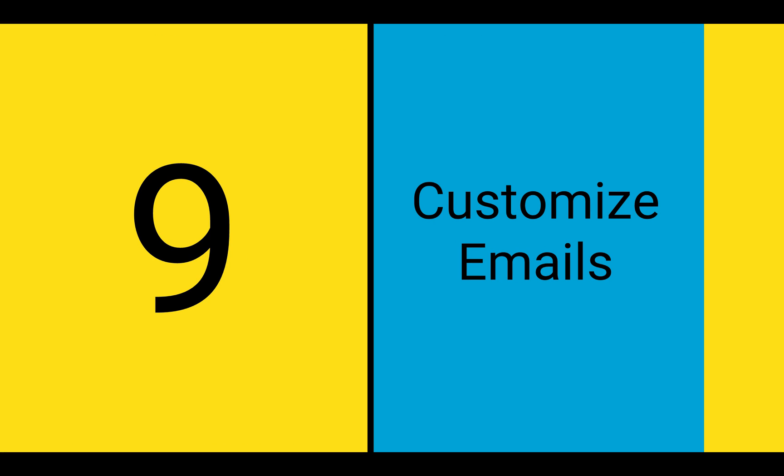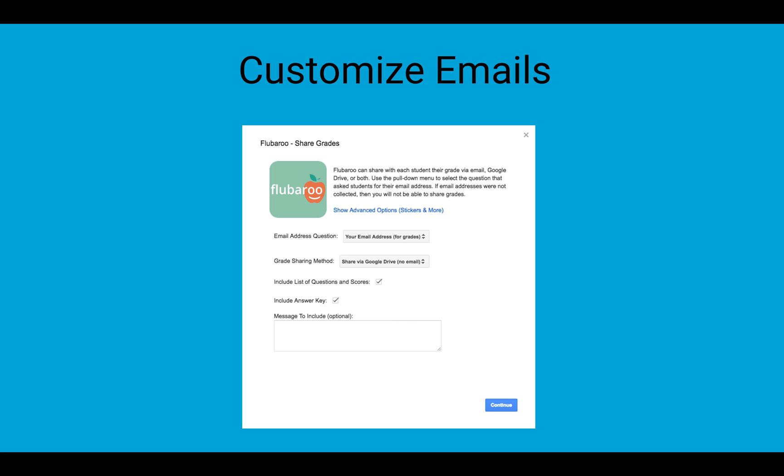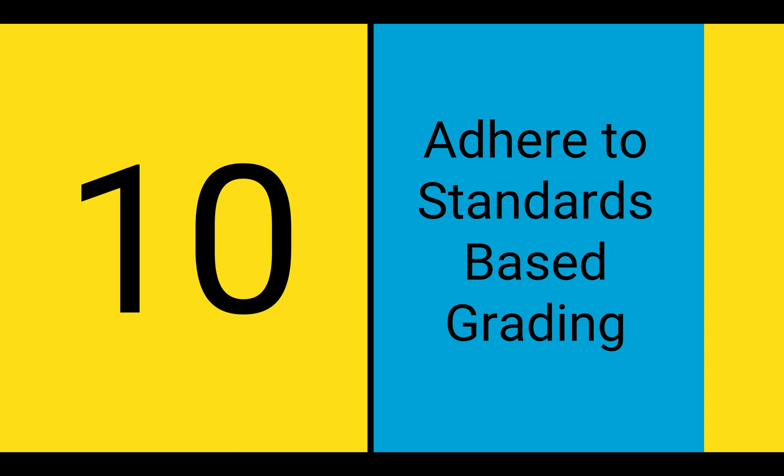Number 9. Customize Emails. When sending emails, many teachers have concerns about students sharing their responses or the questions with one another. To avoid this, you can now click on Show Advanced Options to pick more advanced options for how questions and content are shared in the emails. For example, instead of including all questions, you can choose to only include questions with correct answers or incorrect answers. And you can also choose whether or not you want to include the student's own response, which is checked by default.